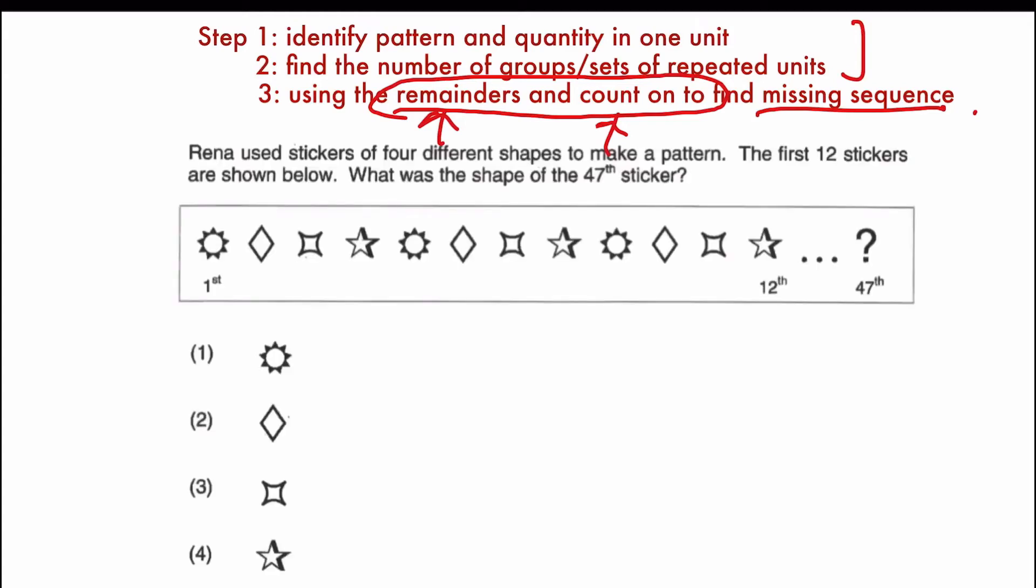Let's take a look at this particular question. The number is still pretty manageable, and you can still count on up till 47. But let's try solving using what we have learned just now. You may pause the video at this moment, and then attempt the question before I go through it. Rena used stickers of four different shapes to make a pattern. So they have already told us it's four stickers per pattern. The first 12 stickers are shown below. What was the shape of the 47 sticker? Remember, you're not going to count on all the way till 47. So there are a total of 47. So step number 1, identify the pattern. We have done that. And the quantity in one unit, there are 4. There are 4 different shapes in one unit.